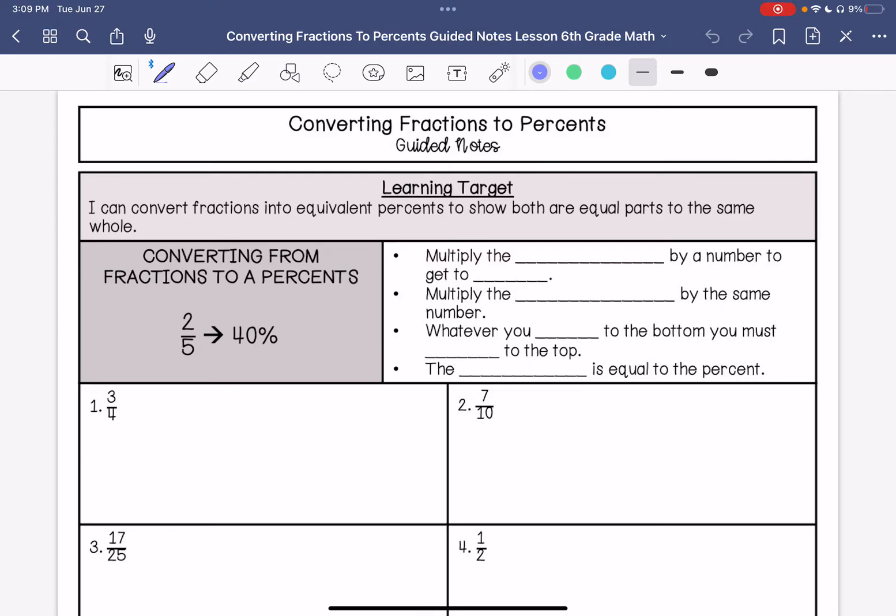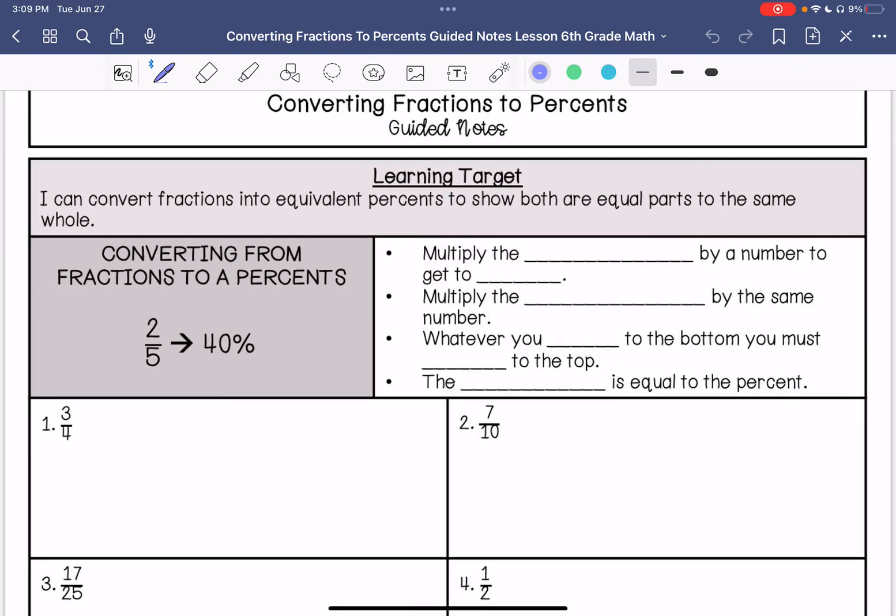So our steps to convert a fraction to a percent: we need to multiply the denominator by a number to get 100. Then you are going to multiply the numerator by the same number. And the reason we do that is to make sure that we're getting an equivalent fraction. So whatever you do to the bottom, you must do to the top. And then the numerator, once it's over 100, is going to be what the percent is.